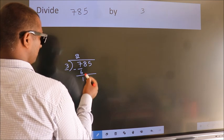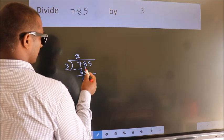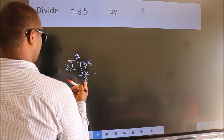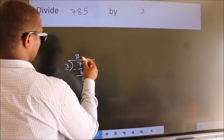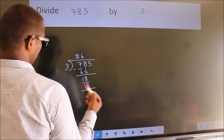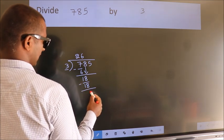After this, bring down the beside number. So, 8 down. So, 18. When do we get 18? In the 3 table, 3 times 6 is 18. Now, we subtract. We get 0.